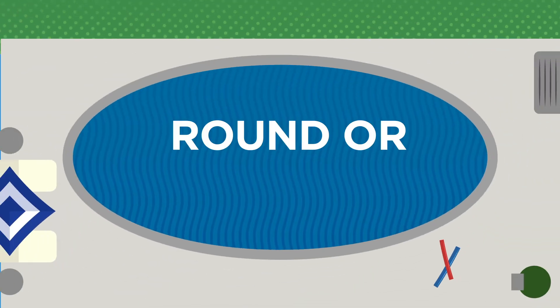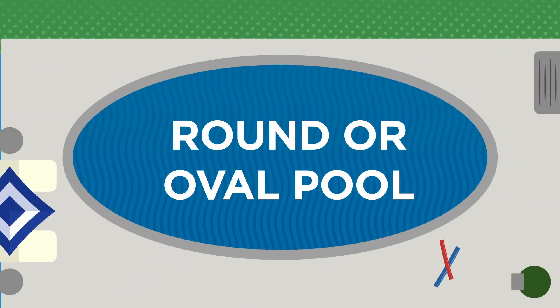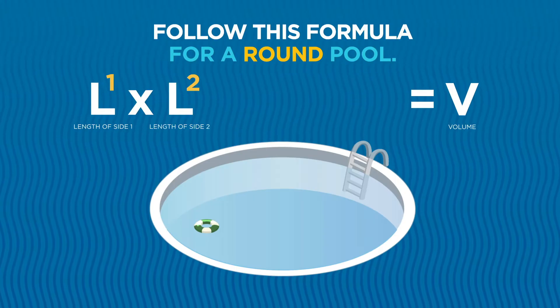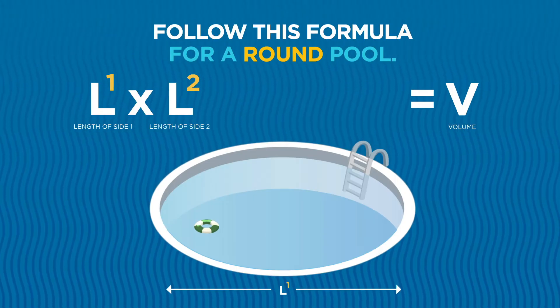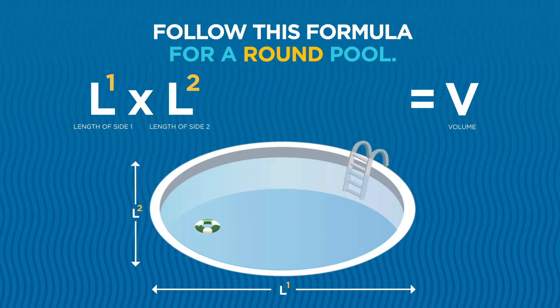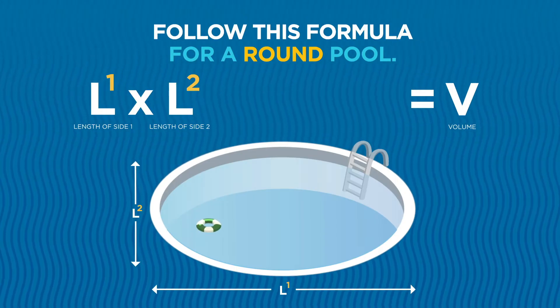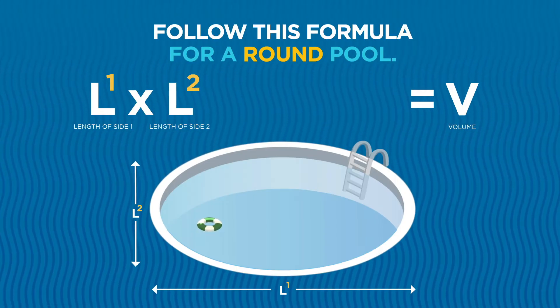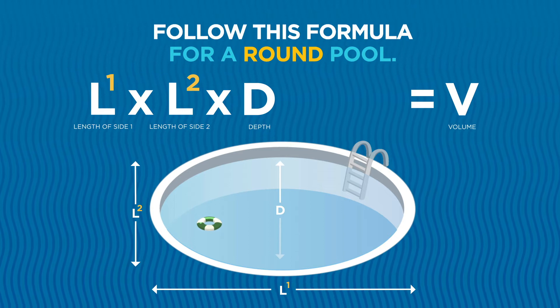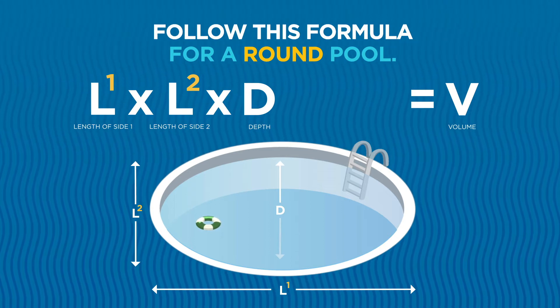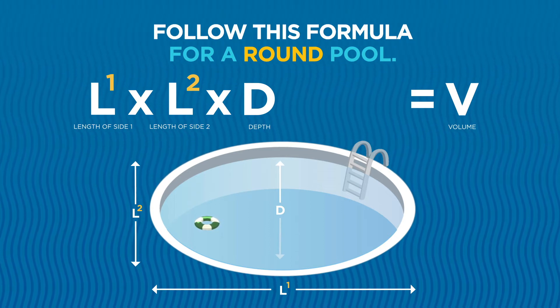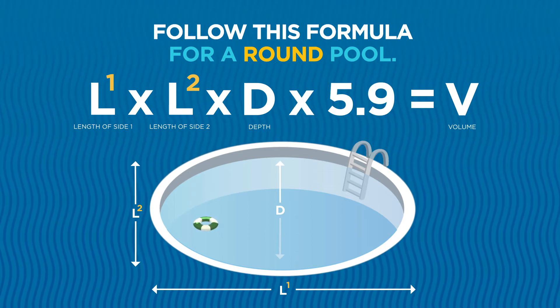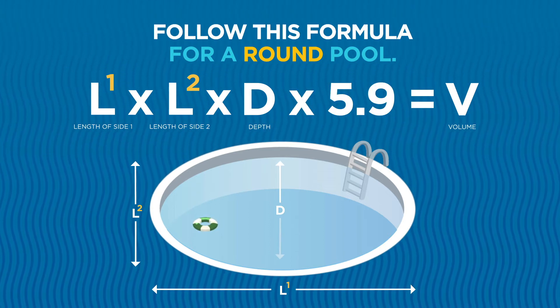If your pool is round, multiply the two diameters, or lengths across the pool, then multiply by the average depth. Finally, multiply by 5.9.